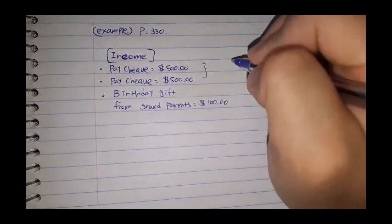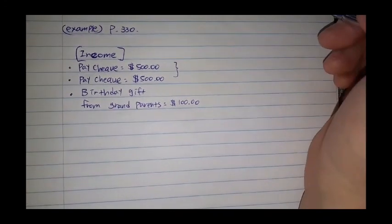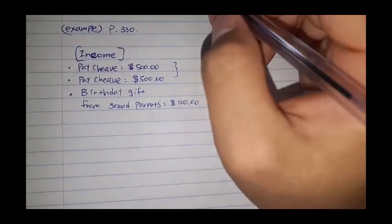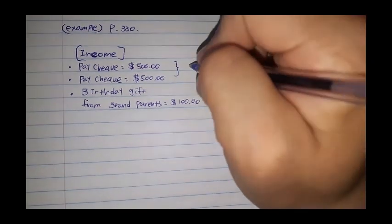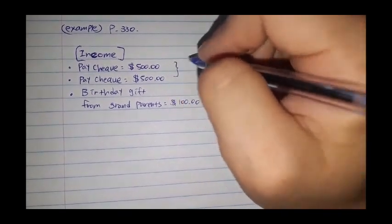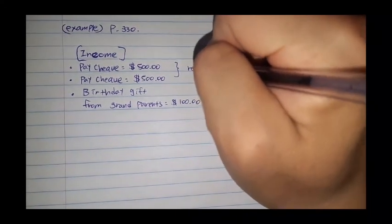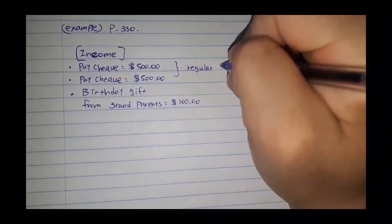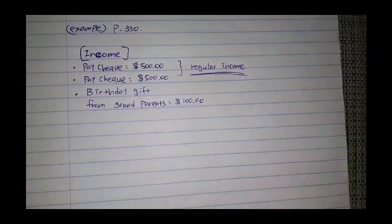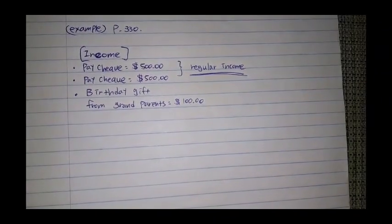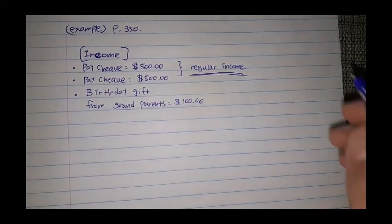Now first thing first, we need to categorize. When it comes to categorization, you need to understand that we need to find if it's regular income or it's a variable income. If you think about paycheck, $500, $500, it seems like that person is receiving bi-weekly. Although the date is not specifically given, we can predict that $500 is repeated. So you can conclude that this is actually a regular income.